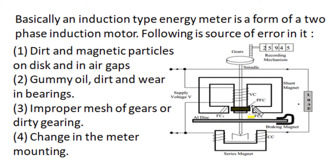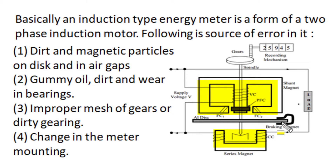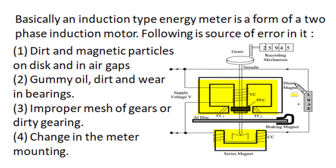It is a form of a two-phase induction motor where voltage excitation in the shunt magnet and current excitation in the series magnet produce two time-varying sinusoidal alternating fluxes around the aluminium disk, and induced EMF circulates current in this disk. Induced eddy currents interact with these magnetic fluxes and produce a rotating torque by spatial design and adjustment. The driving torque in the aluminium disk is made proportional to power flowing in the load through the energy meter.